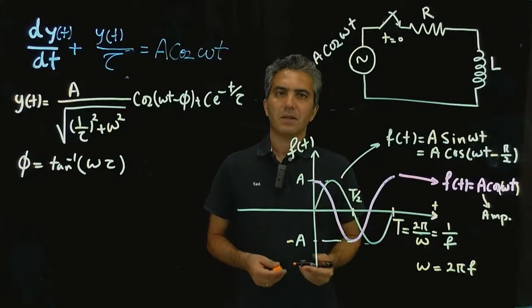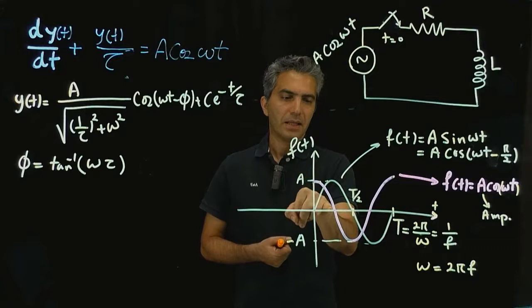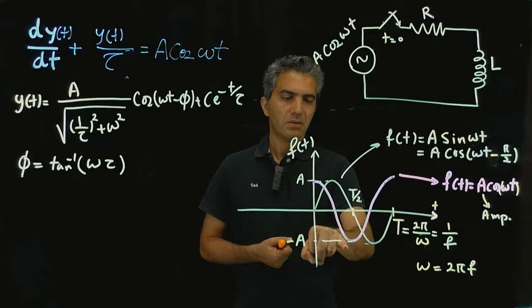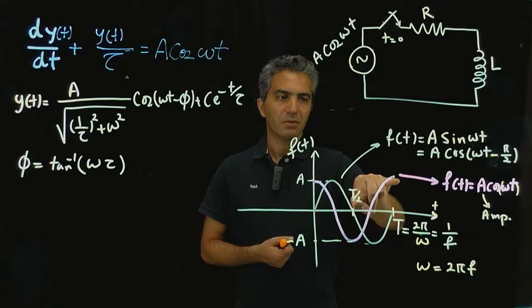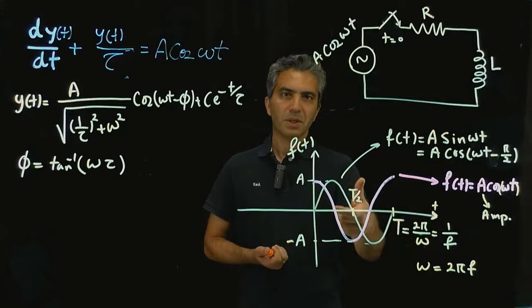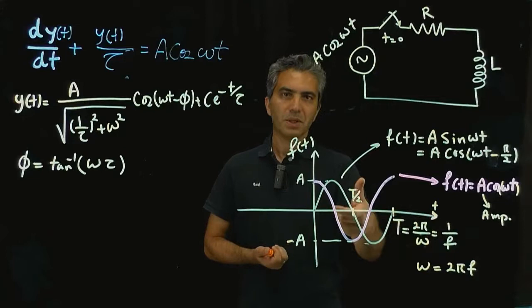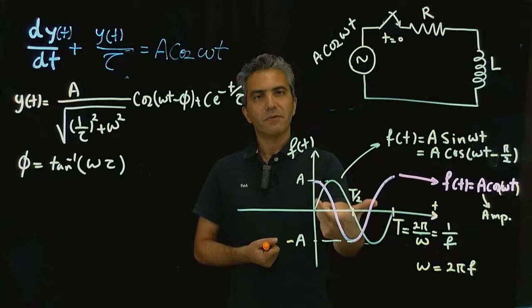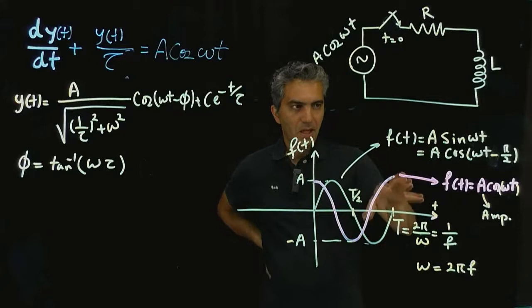When you follow this pattern, the signal starts at A, crosses zero once, reaches the minimum value, goes back up, crosses zero again, and reaches the same value — all within one period. That period is defined as 1 over the frequency. When we say sinusoidal, it includes both sinusoids and cosines — they're the same family of signals, and we'll quickly discuss how they relate to each other.